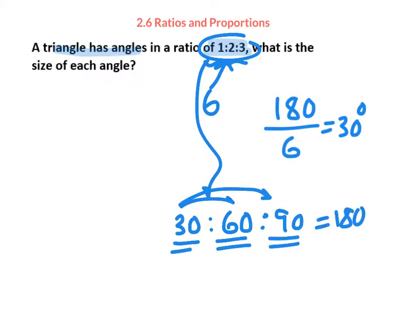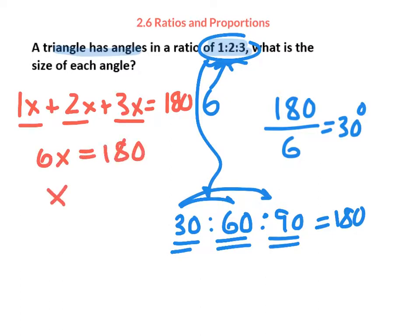Another technique that I see happen quite a bit is you could do it this way. It's basically the same idea, but a little bit more formal maybe. This says one angle and the other add up to 180. You get 6x equals 180, and guess what? You get x equals 30, just like the other situation.